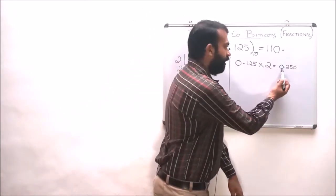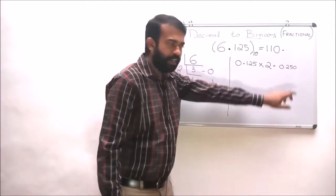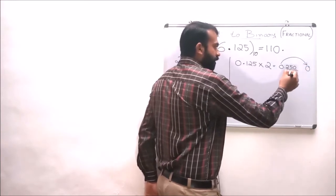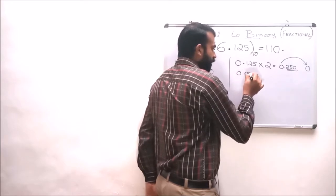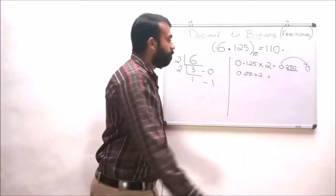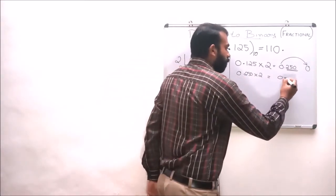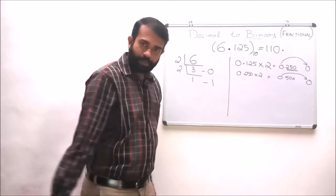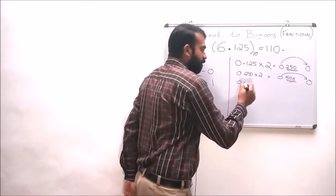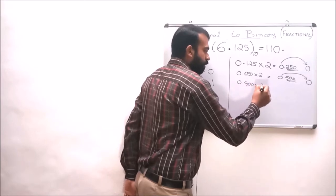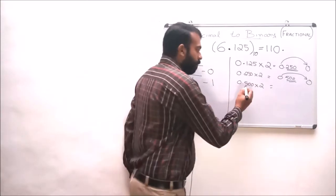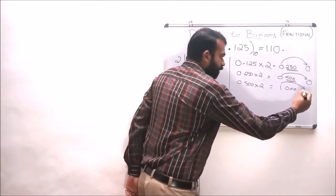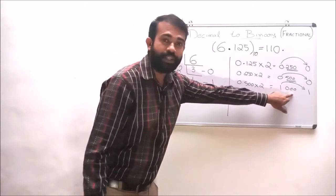Here the whole number portion of 0.250 is taken as the answer digit, which is 0, and the remaining 0.250 is multiplied again by 2 to get 0.500. Again, the whole number portion is 0 and the rest 0.500 is multiplied by 2 to give 1.000. The whole number portion is 1, which is taken as the next answer digit, and the remaining portion is 0.